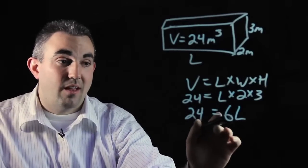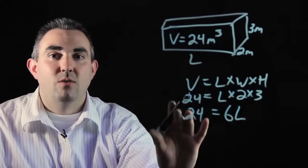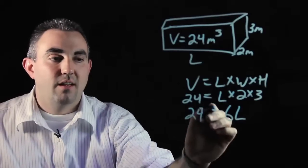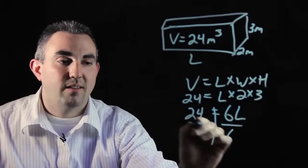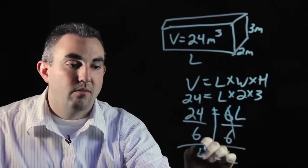We need to figure out what this L is. This is a multiplication problem. In order to figure out the missing number, you need to do the opposite of multiplication, which is divide. So we're going to divide by 6 on both sides, and L will be 4.